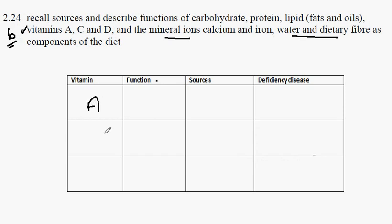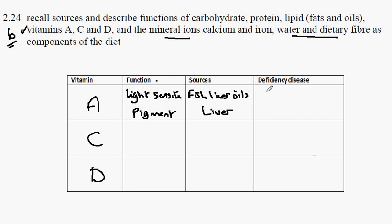Let's start with vitamin A, C, and D. The function of vitamin A is to produce light-sensitive pigments in our eye, and that allows us to see in poor light conditions. The source of vitamin A are fish liver oils and liver itself. A deficiency disease caused by this is that we can't see well in dim light, and this is known as night blindness. So we have reduced vision in poor lighting conditions.